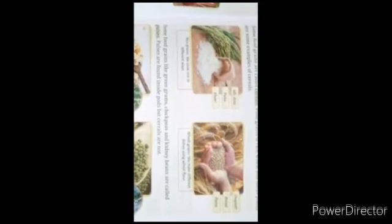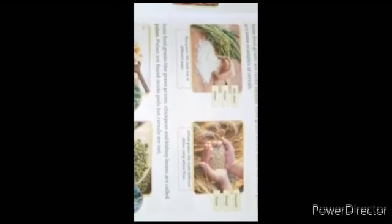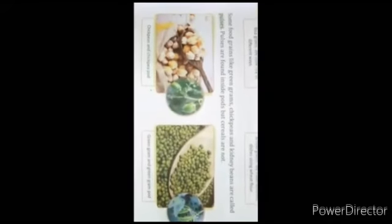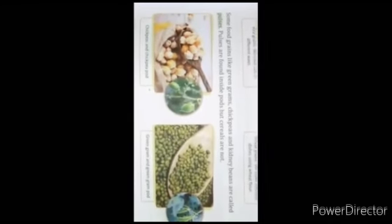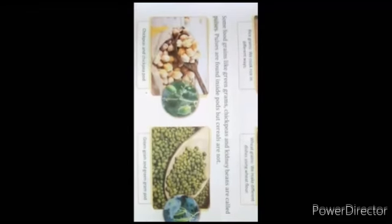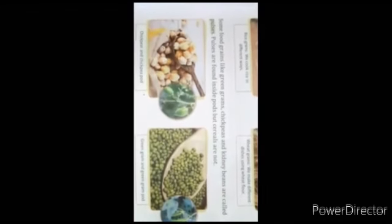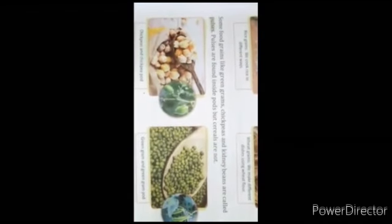Now some food grains like green gram, chickpea and kidney bean are called pulses. Pulses are found inside pods but cereals are not. Now you can look over the picture, chickpea and chickpea pod. First one is chickpea and chickpea pod. Now next one is green gram and green gram pod.